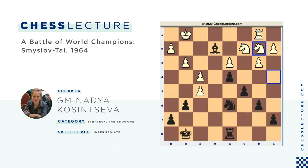Maybe Smyslov believes that going into the endgame is his best chance to play against Tal, who is a very tactical player. Maybe he believes Tal will be bored and white can survive a slightly worse endgame. Actually, the endgame as for me is much better for black. Black has bishop versus knight in an open position, and black has a better pawn chain. Let's see what happened.